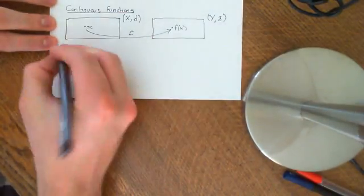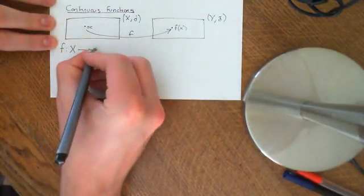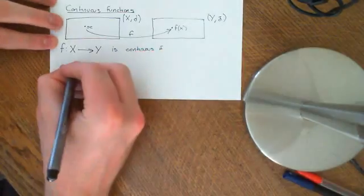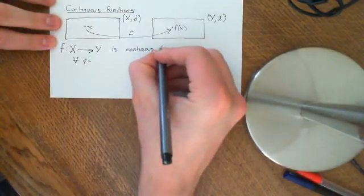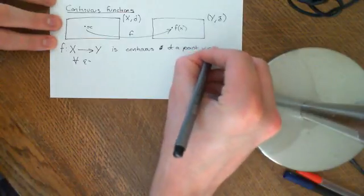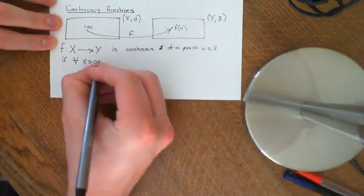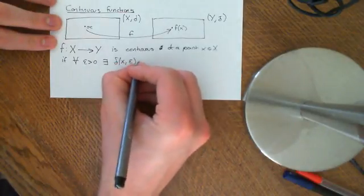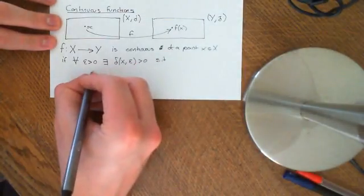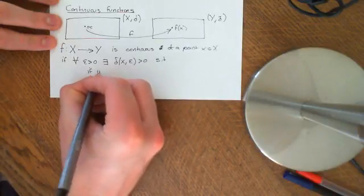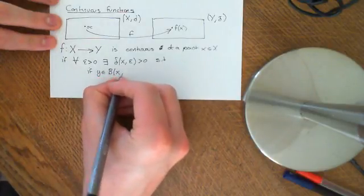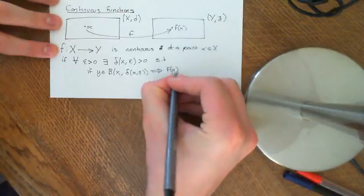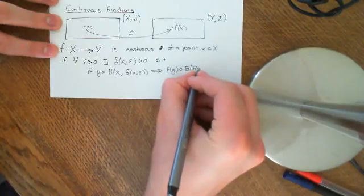The definition of continuity: we say that f, which maps the set X onto Y, is continuous at a point x in X, if for all epsilon greater than 0, there exists a delta — which depends on your position x and on the size epsilon — greater than 0, such that if y is an element of the open ball around x of radius delta, then f(y) is an element of the open ball around f(x) of size epsilon.